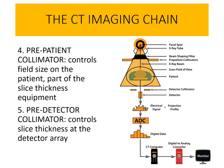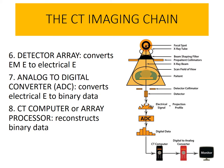Component number four is the pre-patient collimator. Its function is to control the field size on the patient, and it's also part of the slice thickness equipment. Component number five is the pre-detector collimator, whose responsibility is to control slice thickness at the detector array. Number six is the detector array, whose function is to convert electromagnetic energy to electrical energy. Component number seven is the analog to digital converter, or ADC, whose function is to convert electrical energy to binary data.